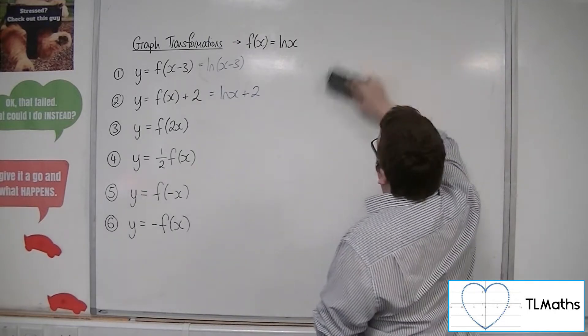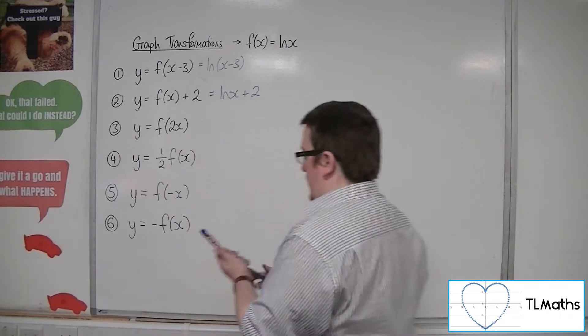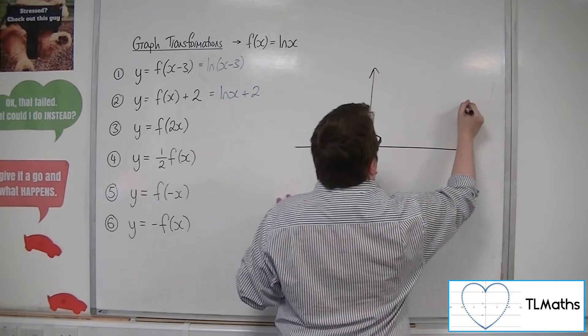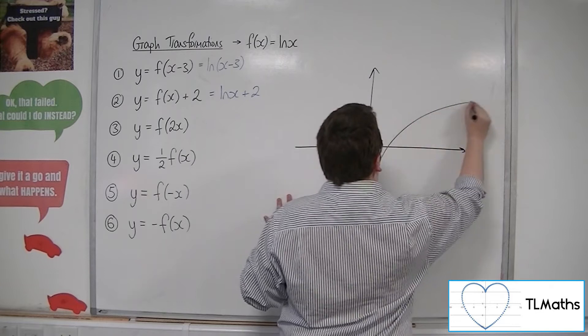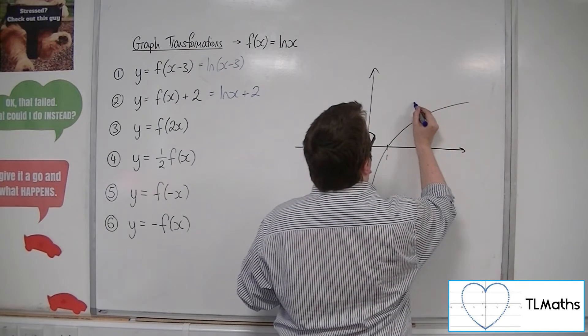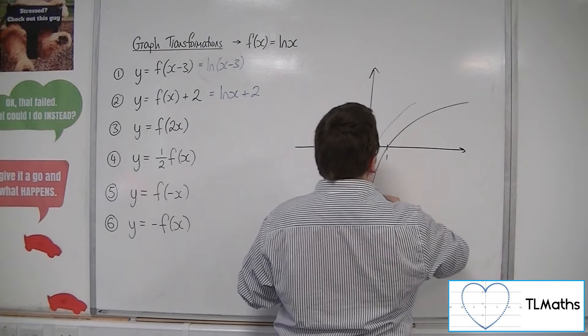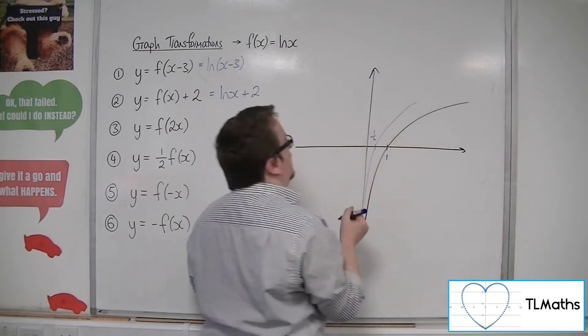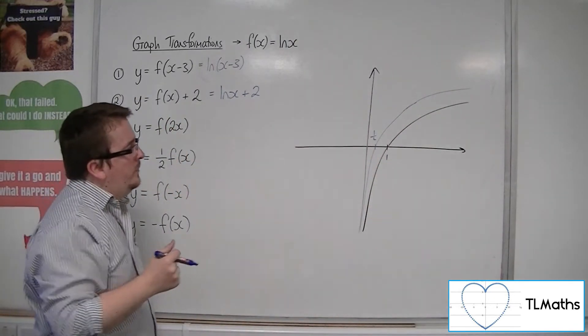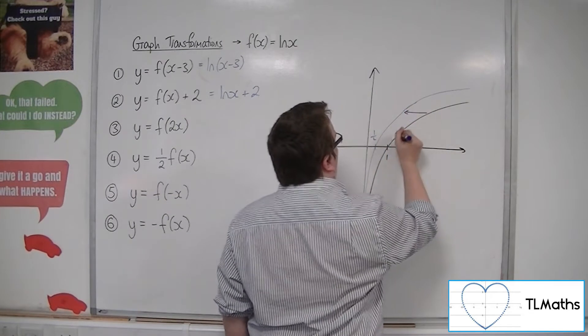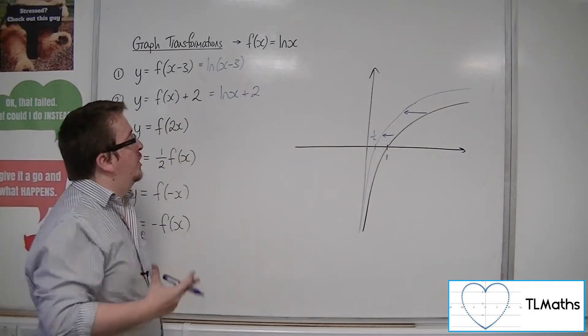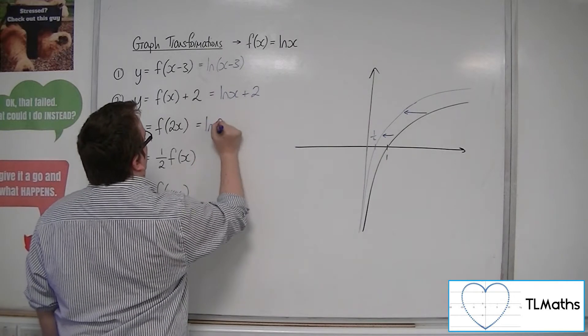Next up, we've got a stretch, a factor of half in the x direction. So there's my original curve. So all of the x-coordinates now get halved. So now we'll be going through a half on the x-axis. But every single point will have its x-coordinate halved. And that's kind of what the curve would look like. So this would be ln(2x).